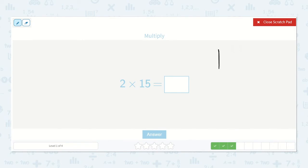2 times 15, so I'll write it 15 times 2. 2 times 5 is 10, so my 0 goes in the ones place, and my 1 goes in the tens place. And then I multiply 2 times 1, which is 2. And then I add on that one more. That's 3. So 30 is my final answer.